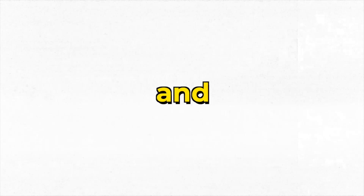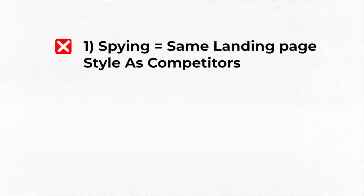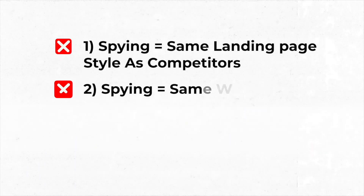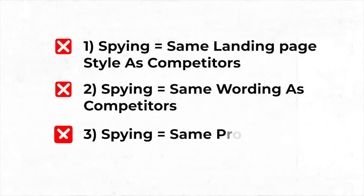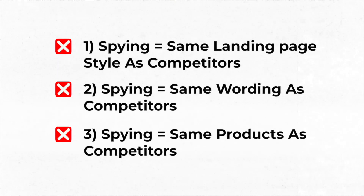This is only because 95% of ecommerce store owners don't even know how to spy the right way. As a result they end up completely doing it wrong, leading to their own failure, because spying excessively can lead to disastrous things such as having the same landing page style as your competitors, the same wording in your branding and brand identity, or worst of all — the same exact product as your competitors.